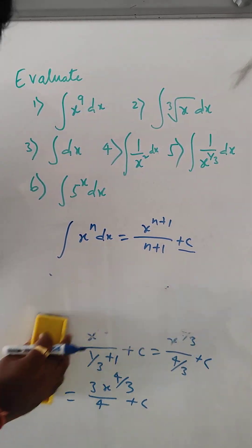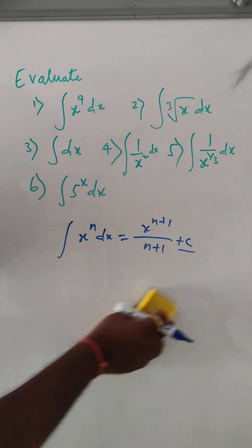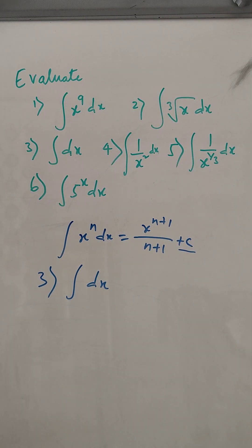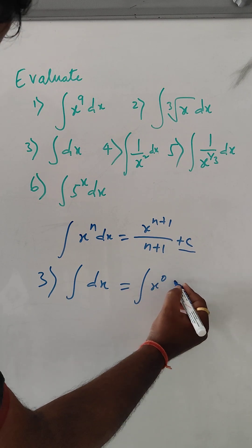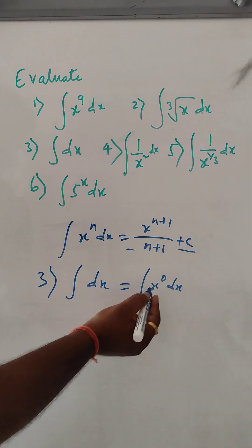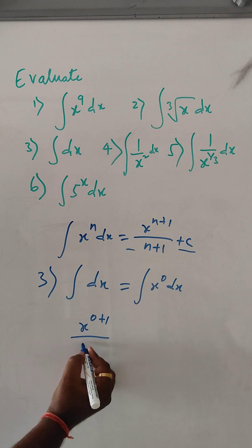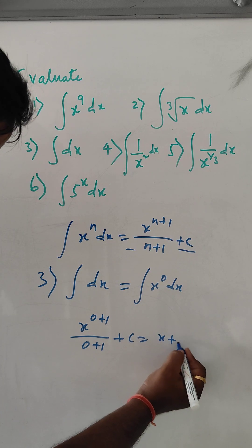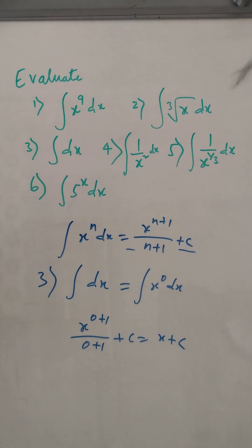Third one. Integral dx. Here there is nothing, which means at least 1 is there. We can write x to the power 0 dx. Using the same formula, x to the power 0 plus 1 divided by 0 plus 1 plus c, which equals x plus c. This is the solution for problem number 3.